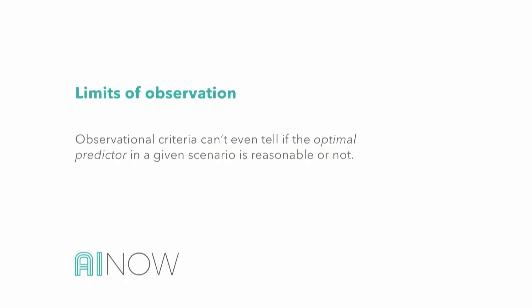What's even more troubling is this: observational criteria can't even tell you if you should be happy with the optimal predictor. If you ask, 'Is optimal prediction fine — would we be happy with a perfectly accurate predictor in this setting?' — observational criteria can't tell you yes or no. In the two worlds we construct, in one case the perfect predictor is something most people would be fine with, and in the other case it's not.